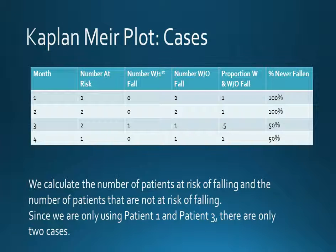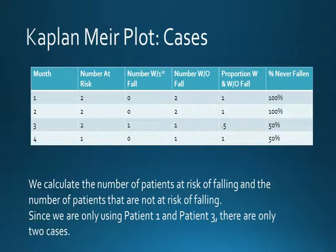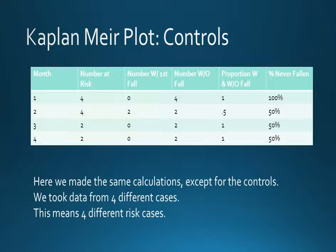Now we are trying to create a Kaplan-Meier plot for the cases first. In order to do this, we calculate the number of patients at risk of falling and the number of patients that are not at risk of falling. For example, at month 3: one fall, one without fall. This is a 1 to 2 ratio, which translates to 50%.